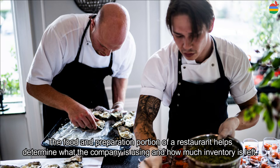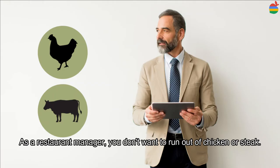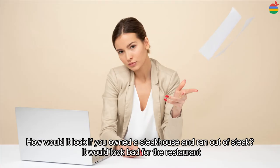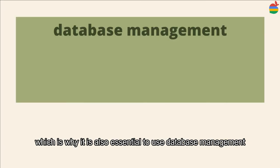The food preparation portion of the restaurant helps determine what the company is using and how much inventory is left. As a restaurant manager, you don't want to run out of chicken or steak. Portion control of food should be established so management can accurately tell how much has actually been sold and what the restaurant has left. How would it look if you owned a steakhouse and ran out of steak? It would look bad for the restaurant.